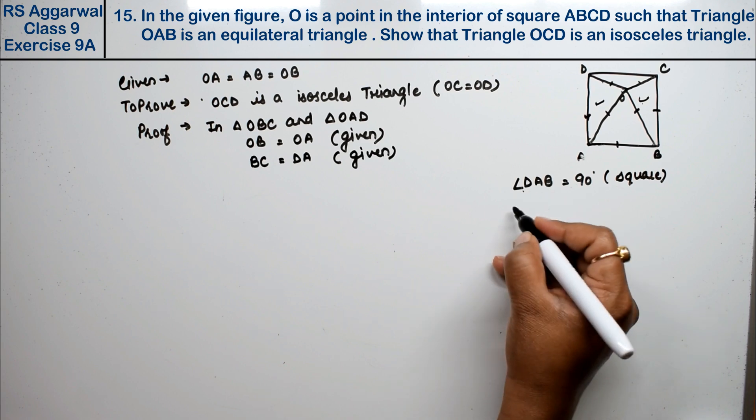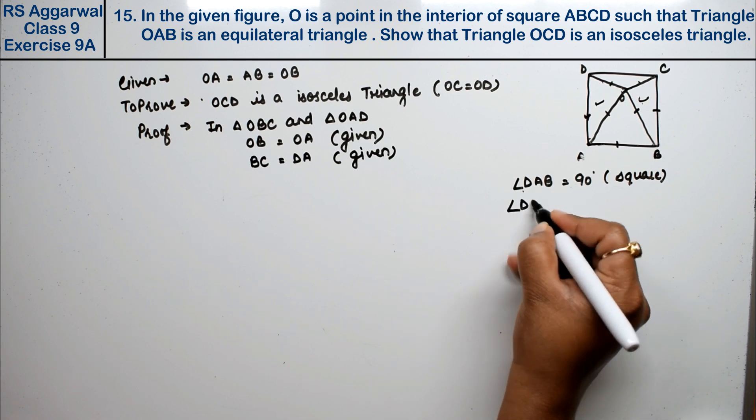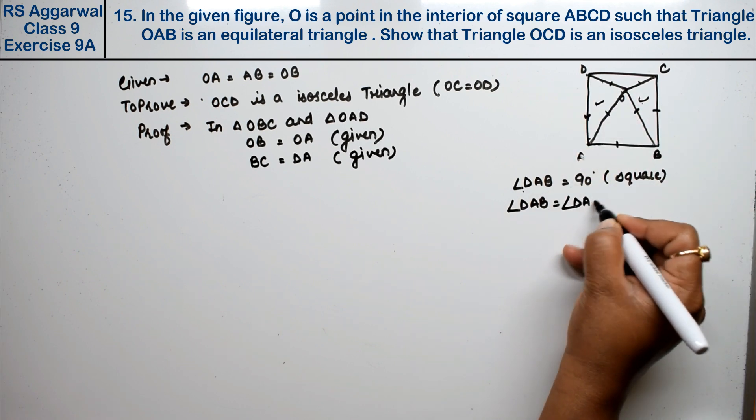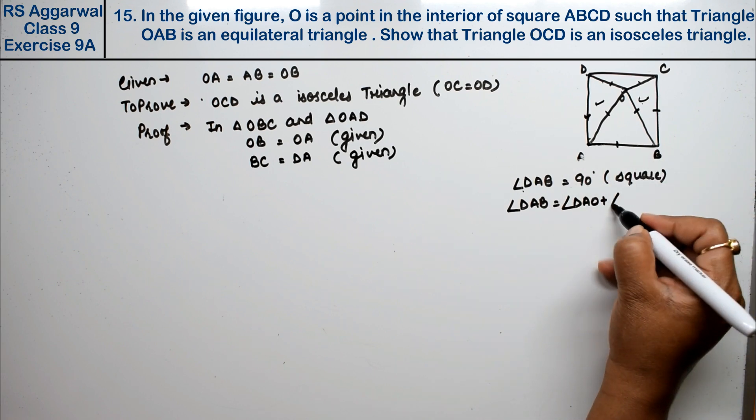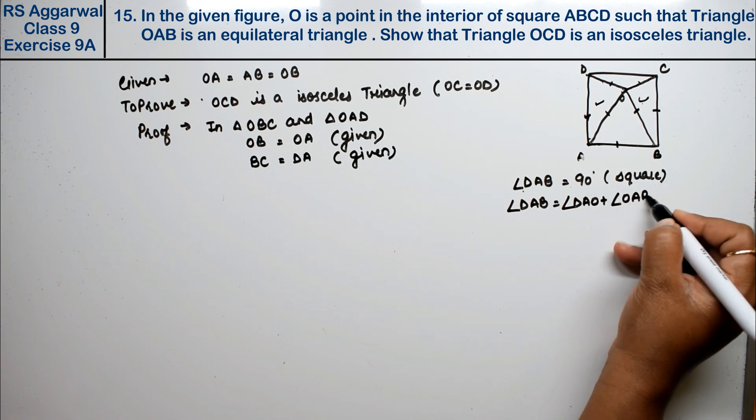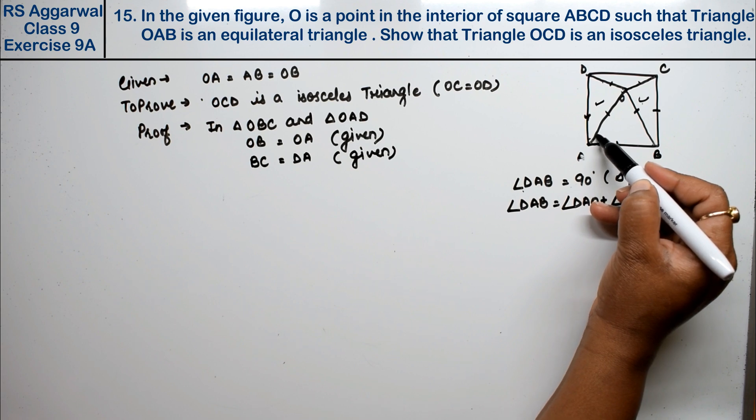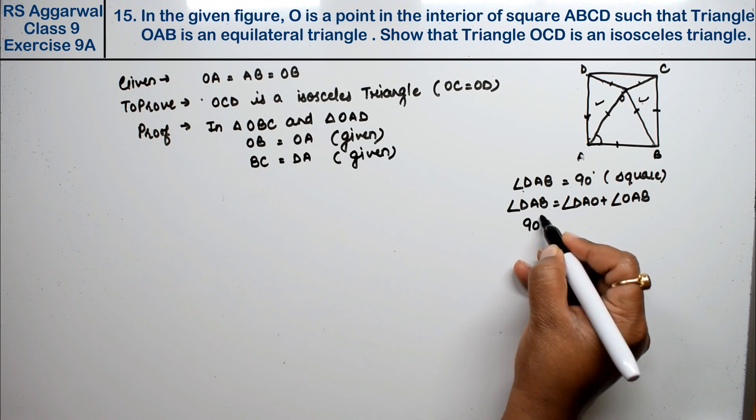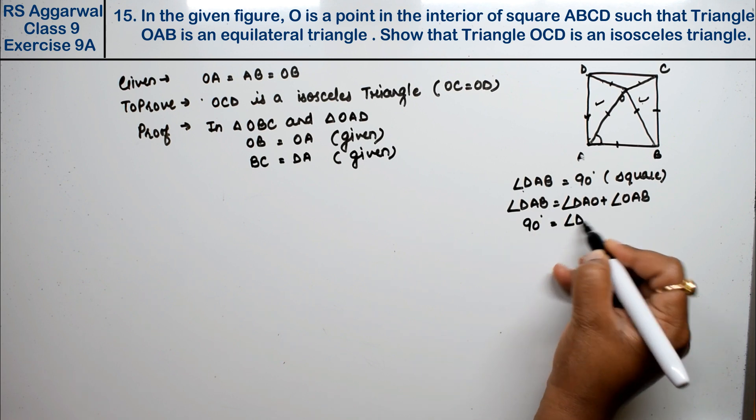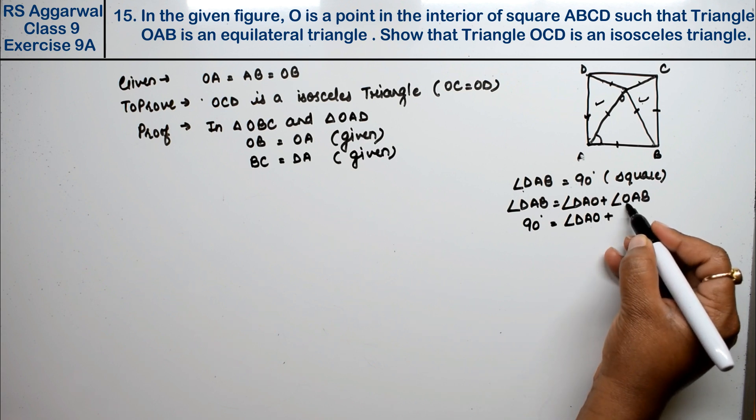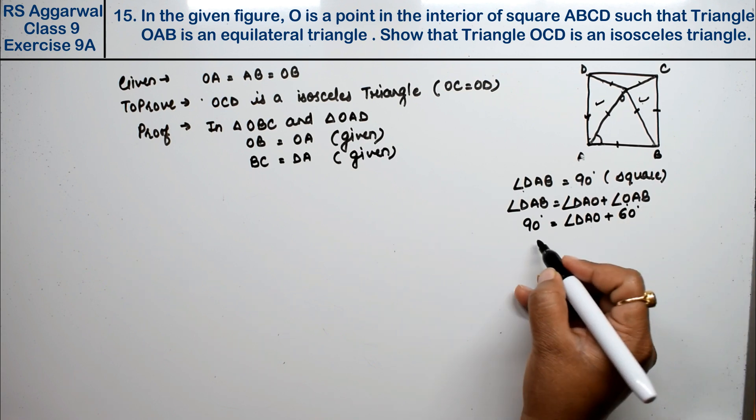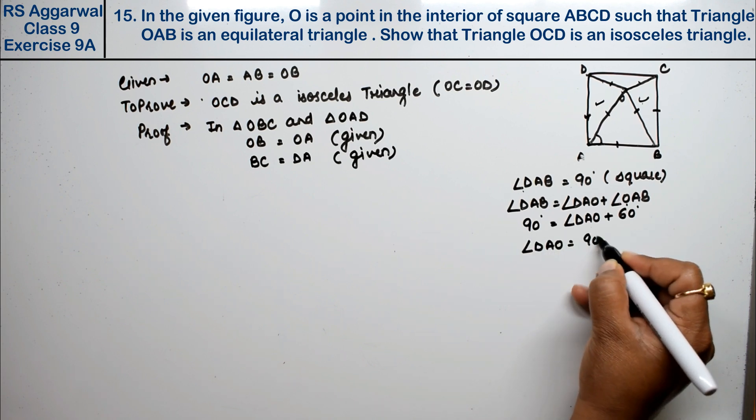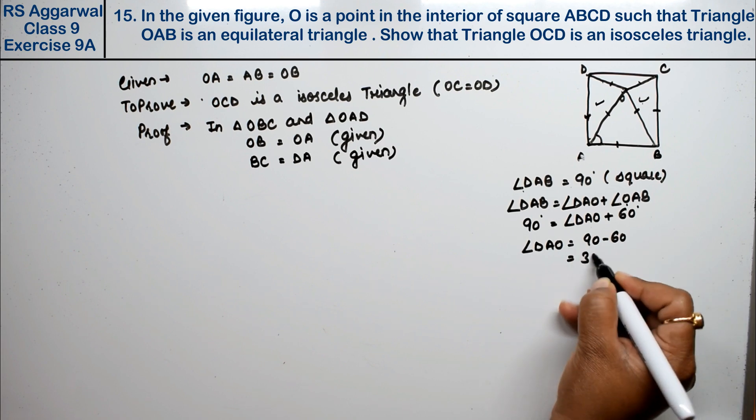Angle DAB is made up of angle DAO plus angle OAB. Since triangle OAB is equilateral, each angle is 60 degrees. Therefore, angle DAO equals 90 degrees minus 60 degrees, which is 30 degrees.